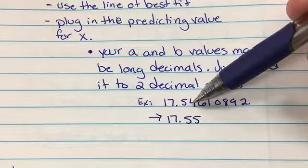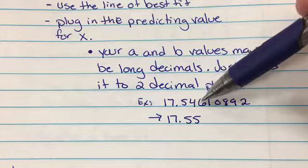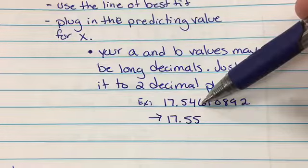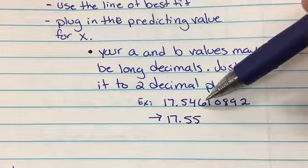Look at your second decimal. It's a four. Take a peek at the third. That's the one that determines whether it stays or goes up. Since this is a six, you bump the four up to a five.